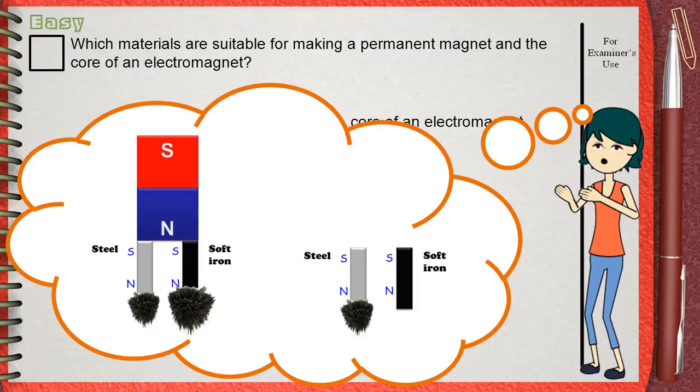While steel keeps its magnetic property even in the absence of the supporting magnet.